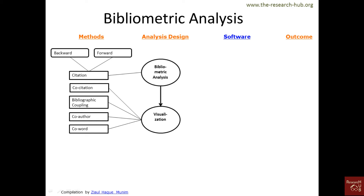On the other hand, bibliographic coupling means two articles cite the same article, which means those two articles could be similar because they're citing the same reference. So in this case, article A and B are citing article C, which means A and B could be similar because they are citing the same article.